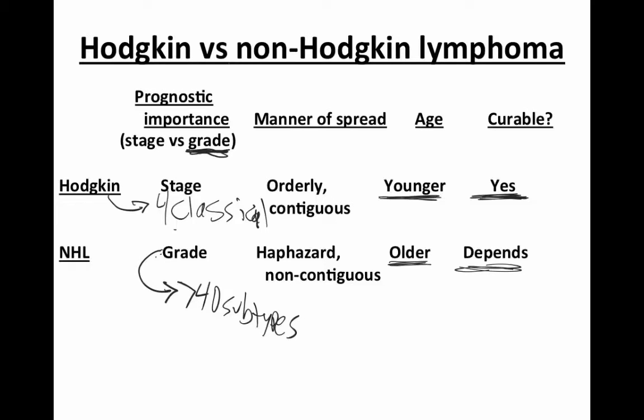Going back to some other differences: Hodgkin lymphoma is a B-cell malignancy, with about 95% arising from the germinal B-cell. Whereas for non-Hodgkin lymphomas, most of them — about 80% — are B-cell, but they can be T-cell as well.